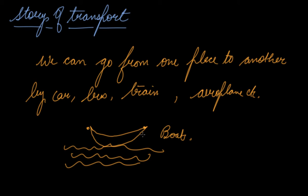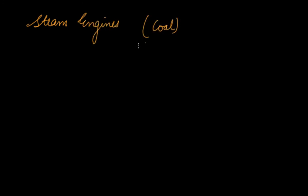Next came the invention of carts. Apart from using animal power, the power of carts was also used. After that, the steam engine was invented, which was used to run trains. Steam engines worked with coal and were invented about 300 years ago, bringing another revolution in transport — animal power was replaced by engine power.